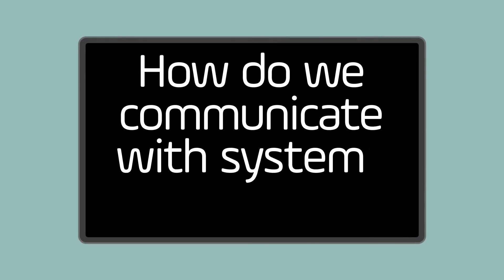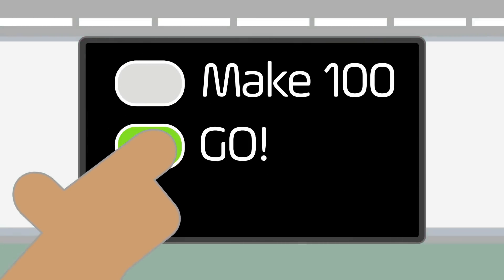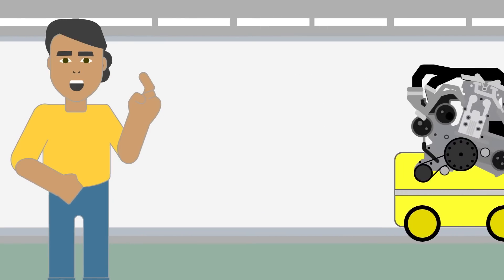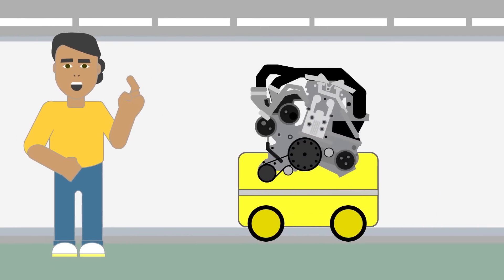How do we communicate with the systems and robots in manufacturing? Should we press buttons? Can we tell them what to do? How quickly should the robots work? How will the robots know what we are doing?